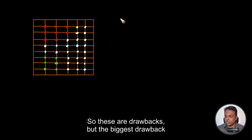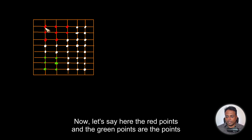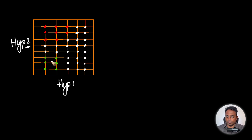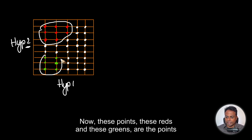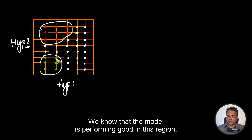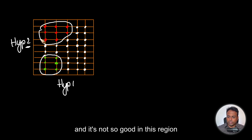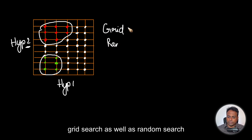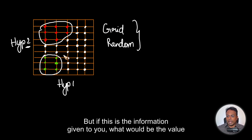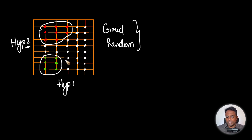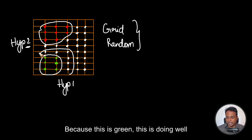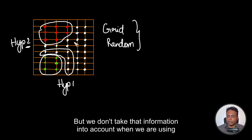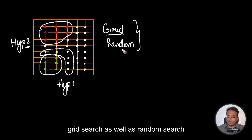These are drawbacks, but the biggest drawback with both approaches is this: say the red points and green points are hyperparameter 1 and hyperparameter 2 combinations that the model has already trained on. The whites are yet to be trained. We know that the model is performing well in this region and not so well in this other region. Now, with this information — and this information is not used in either grid search or random search — if this information is given to you, what value would you try for your next iteration? We would be more likely to try around the green area, because this region is doing well.